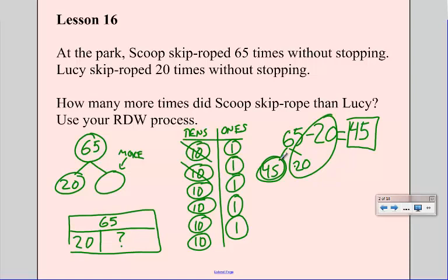Now the very last thing I have to do, I read my problem, I drew some pictures, I wrote a number sentence. Now I've got to write a word sentence and state my answer. My answer was about skipping rope more.